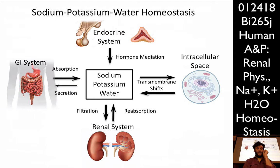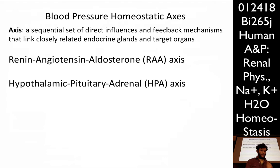And then lastly, the renal system — which is why we're here. There's filtration at the glomerulus and then resorption in the convoluted tubules. All of this — the water, sodium, and potassium homeostasis — are part of a homeostatic axis for blood pressure. An axis is a sequential set of direct influences and feedback mechanisms that link closely related endocrine glands and target organs.